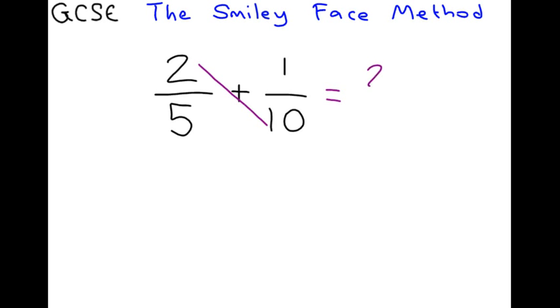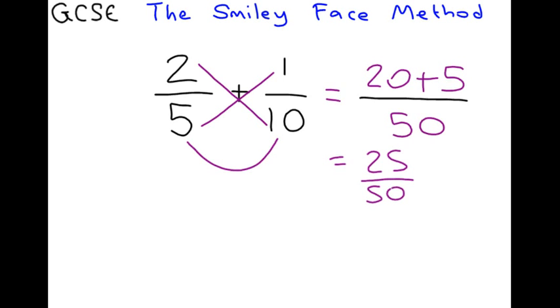2 times 10, 20. 5 times 1, 5. 5 times 10, 50. It's a plus. So, we use a plus. Definitely did not want to rub that out. So, it's 25 over 50.